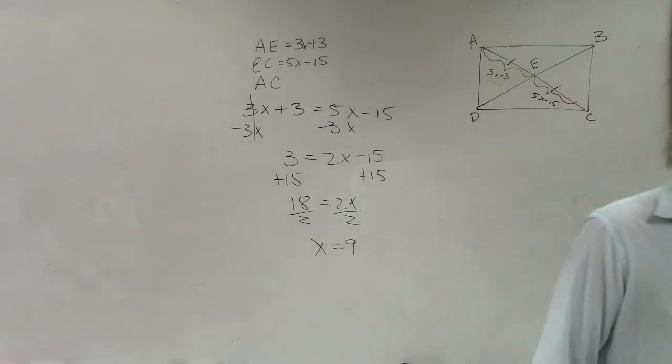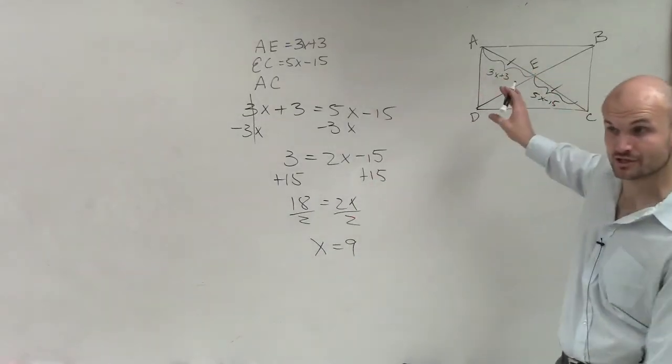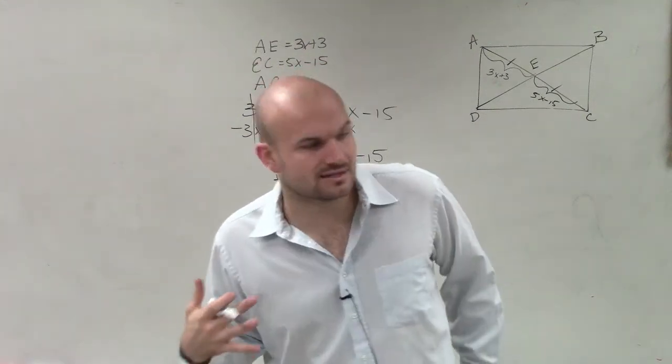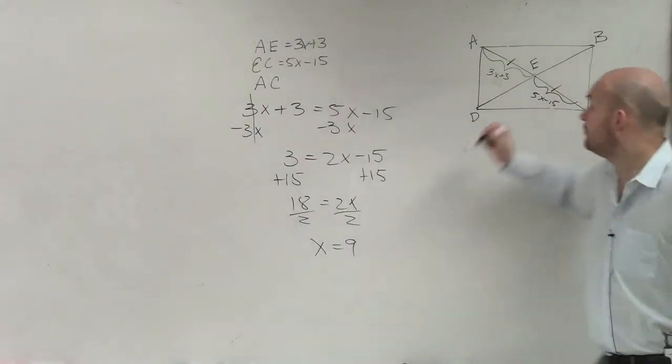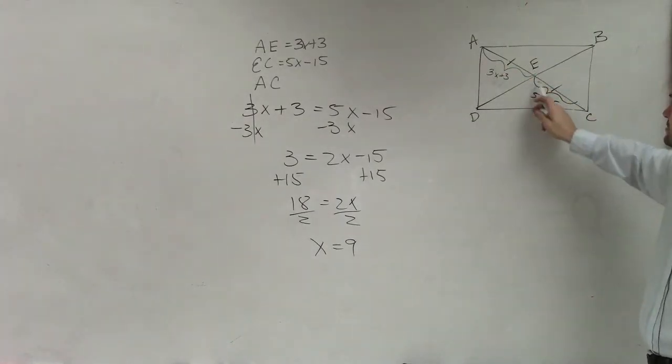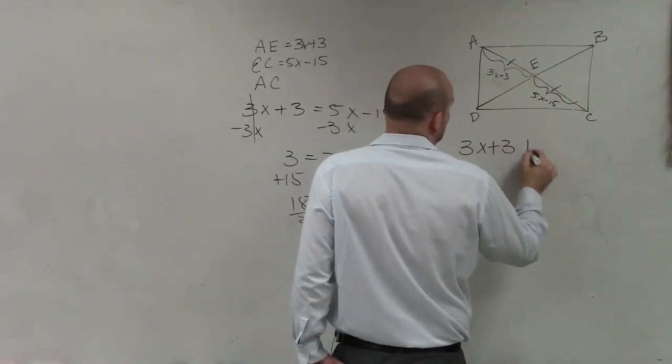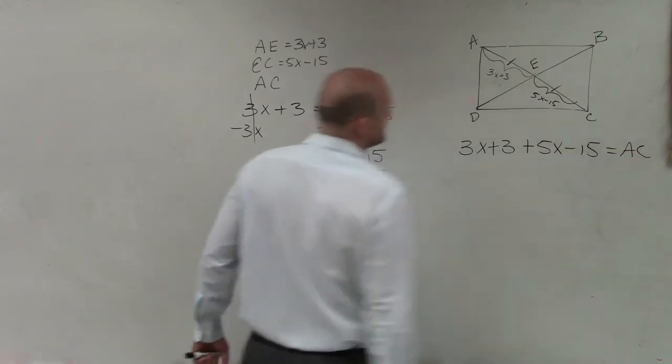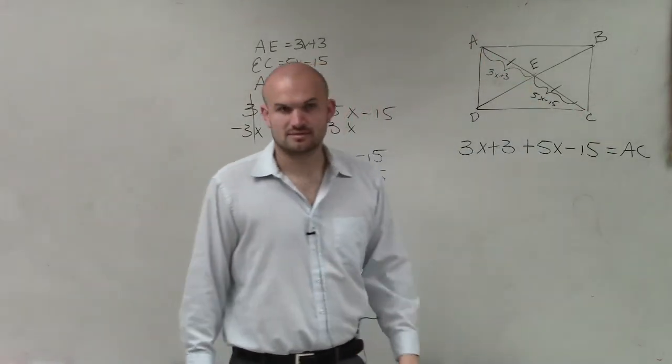But that's not what the question is asking. When you're taking a test, it's become very important that even when you do the problem, not only that you do it, but you make sure you follow through what exactly the question is asking. It's not asking for what is x. The question is asking, what is AC? Well, AC is from here to here. Notice if this distance is 3x plus 3, and this one is 5x minus 15.